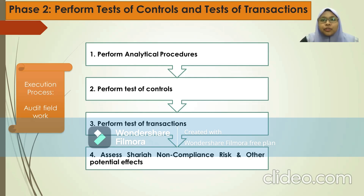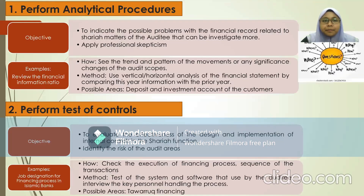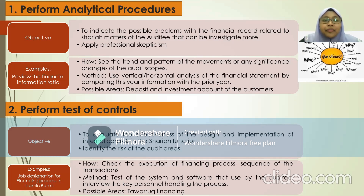The second phase is to perform the test of control and test of transaction. This is the execution process and is usually carried out during the audit fieldwork. There are four processes: performing analytical procedures, performing the test of control, performing the test of transaction, and assessing the Sharia non-compliant risk and other potential effects. The analytical procedures conducted during the field audit aim to indicate any possible problems with financial records related to Sharia methods that can be investigated further. The Sharia auditor can also apply professional skepticism in identifying issues.